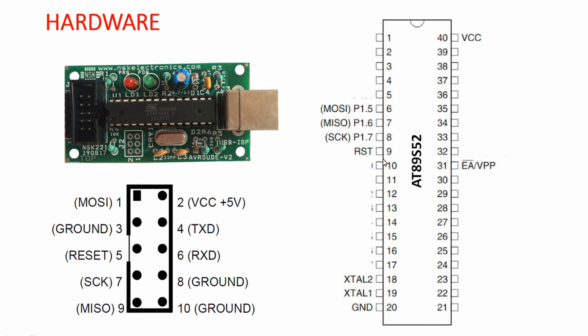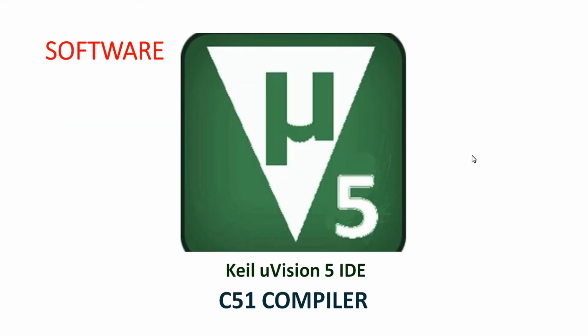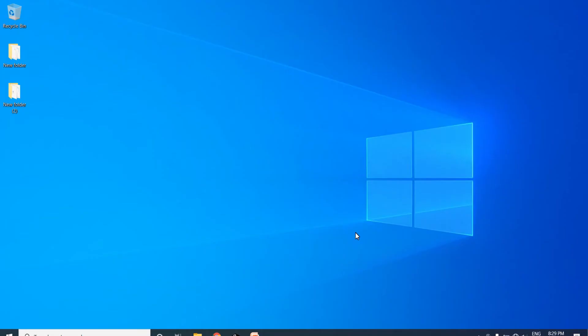In addition, connect an 11.0592 MHz crystal to pins 18 and 19 of the microcontroller, and pull the EA pin high to indicate to the microcontroller that you are using its internal ROM. With this circuit you can upload the hex file to the microcontroller even on a breadboard.